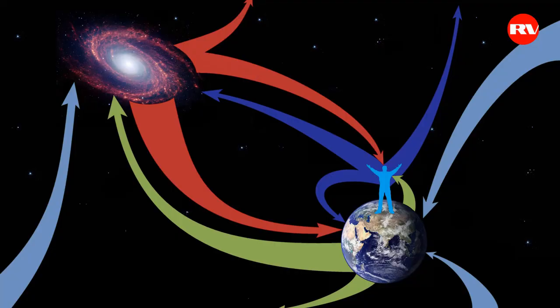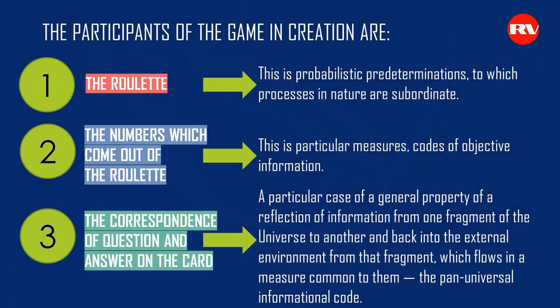Having created this image, let's look at creation. There are planets spinning around, galaxies, comets, and so on. The participants of the game in creation are: the roulette — probabilistic predeterminations to which processes in nature are subordinate; the numbers which come out of the roulette — particular measures, codes of objective information; the correspondence of question and answer on the card — a particular case of the general property of reflection of information from one fragment of the universe to another, flowing in a measure common to them, the pan-universal informational code.